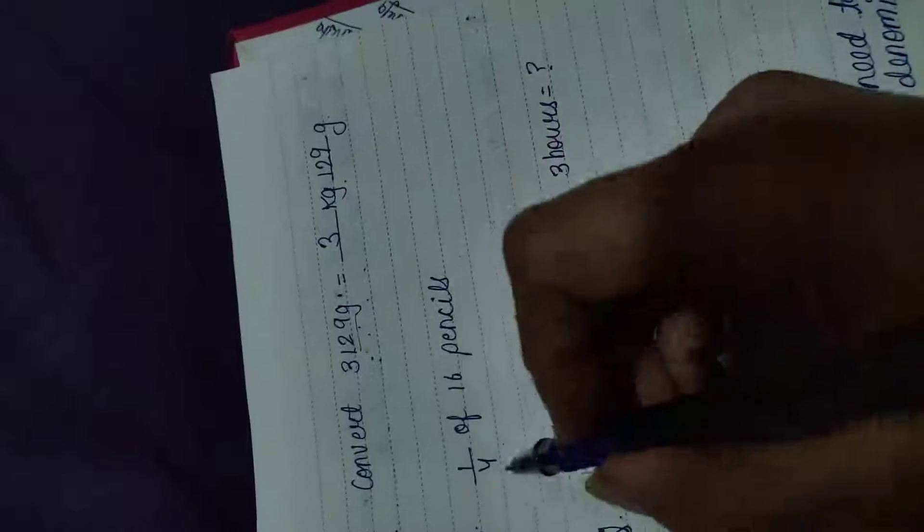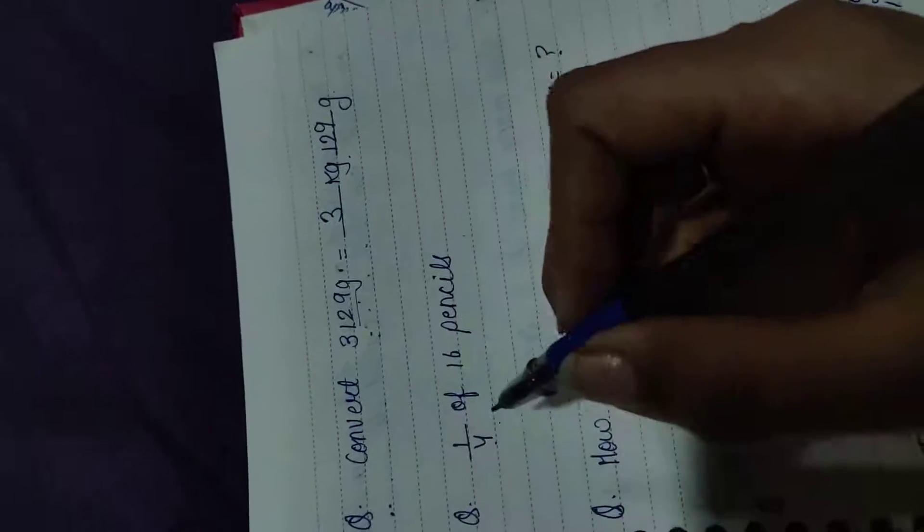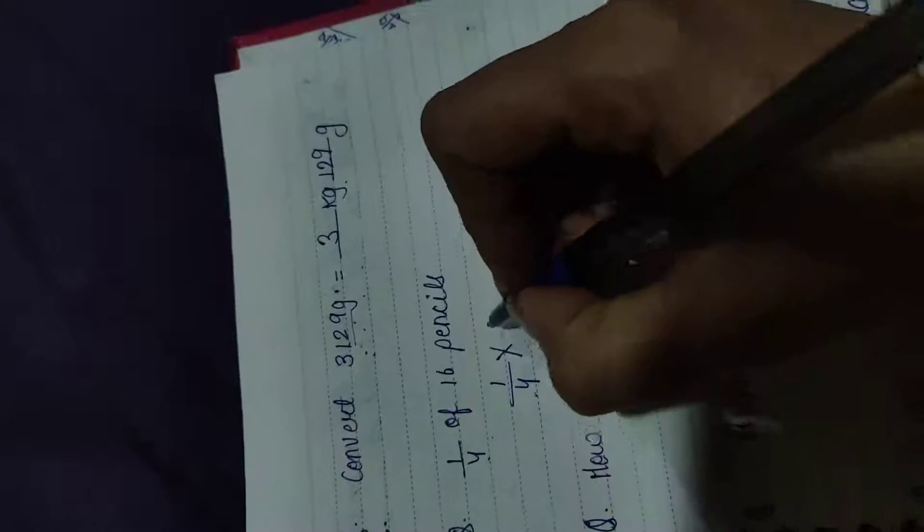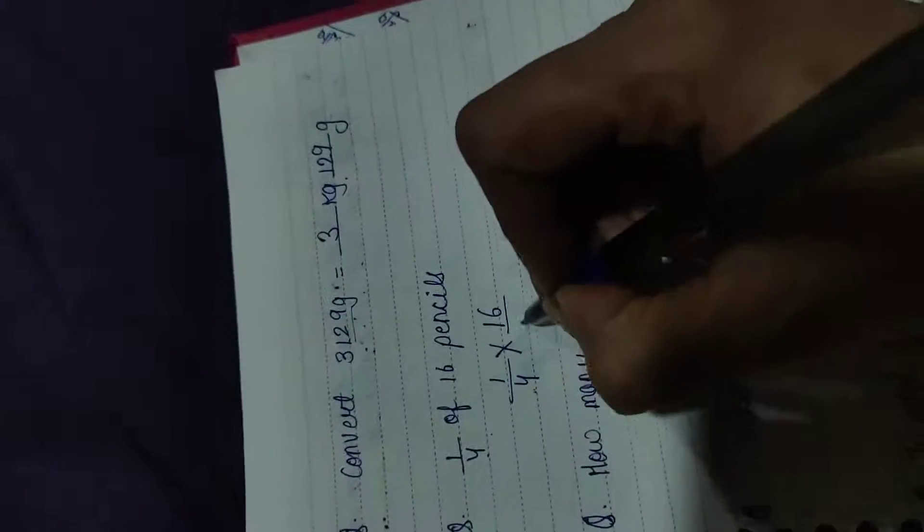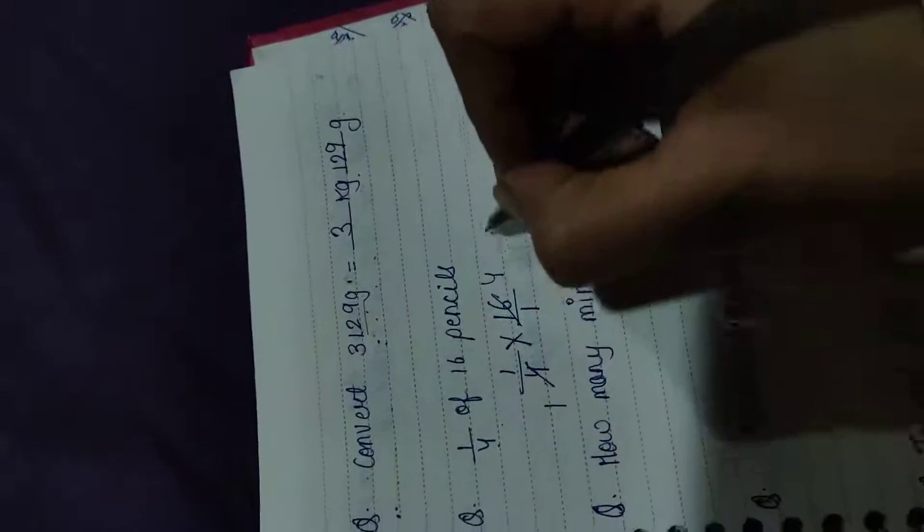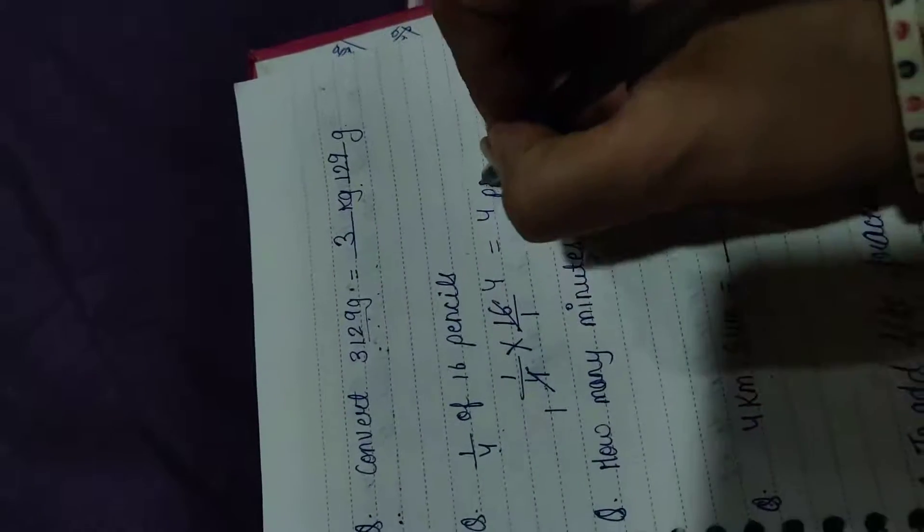Next question: 1 upon 4 of 16 pencils. We have to solve it. 1 upon 4 as it is written, of means multiply and 16. Neche kuch bhi nahi hai, 1 laga do. 4 ones are 4, 4 fours are 16. So answer is 4 pencils.